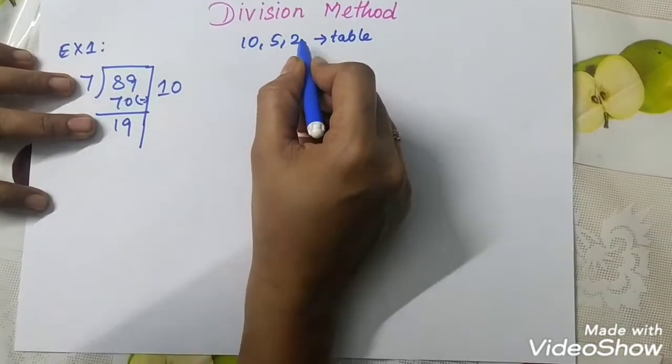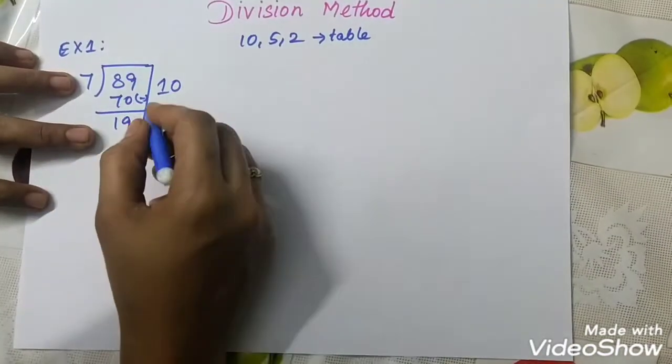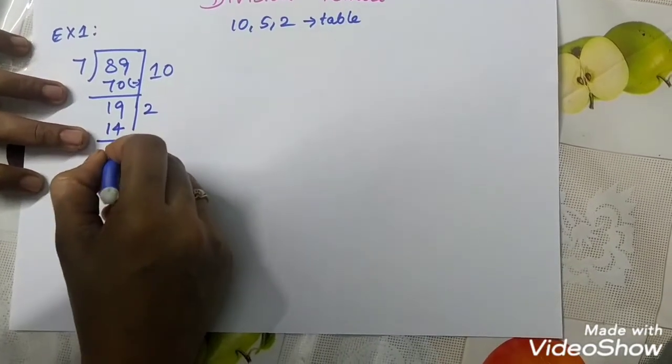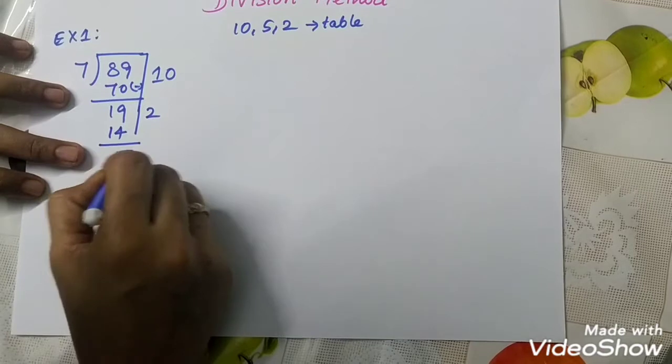Go for 2, 2, 7's are 14. That is 2, 7's are 14. You can write, remaining value is 5. This is reminder.